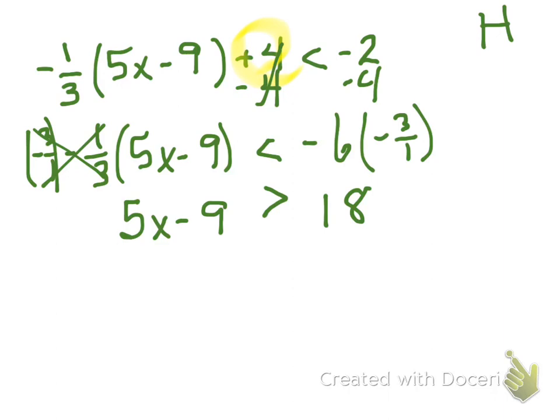Now if I add nine to both sides, I've got five X is greater than 18 plus nine, which would be 27. Divide both sides by five, and X is greater than 27 over five. And that is my answer.